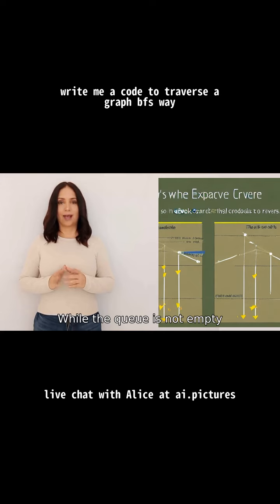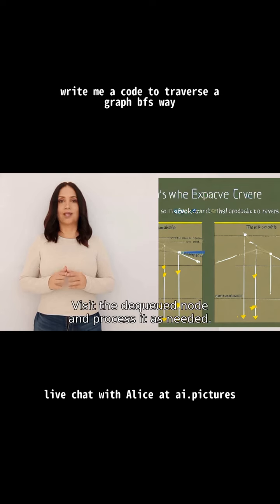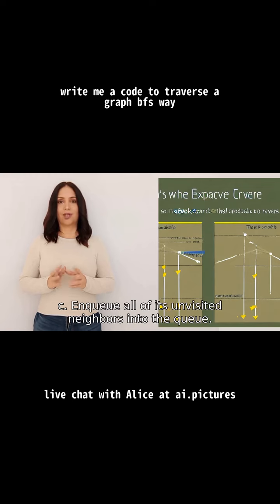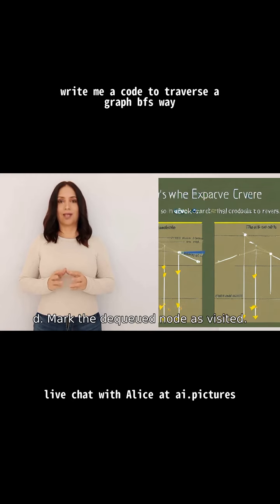Step 4: While the queue is not empty, do the following: (a) Dequeue a node from the front of the queue. (b) Visit the dequeued node and process it as needed. (c) Enqueue all of its unvisited neighbors into the queue. (d) Mark the dequeued node as visited.